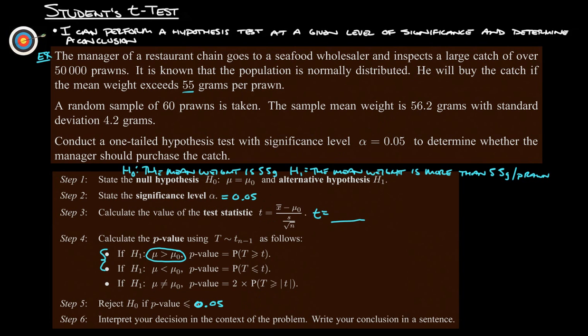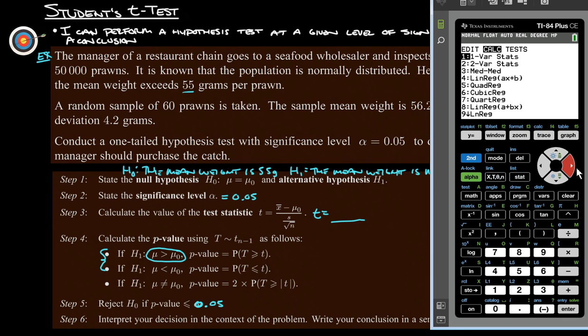Now it's calculator time. So we go into STAT, we're going to go over to TESTS because if you forget where it is, it says Student's t-test. So there's our t-test, push ENTER again. We've got the statistics - we don't have the raw data. There are some examples where you put the raw data in, but we want the stats.